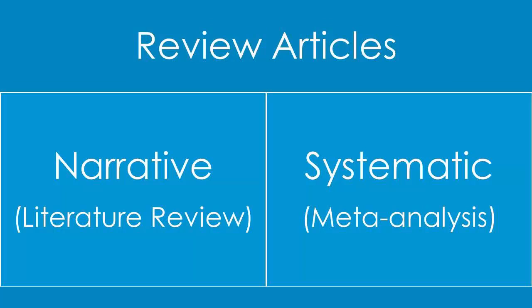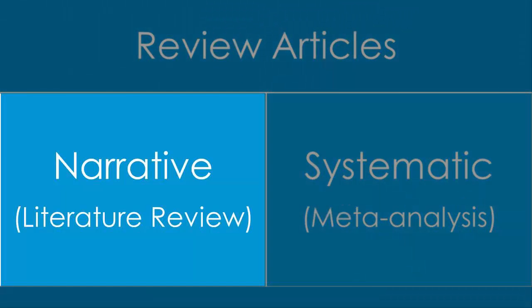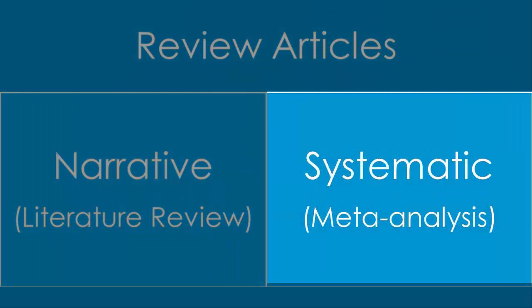Review articles in academic health science journals fall into two categories: a narrative review article and a systematic review article. The narrative style is usually compiled by an expert in his or her area, often called a literature review, while a systematic review represents a more structured and scientific analysis, often called a meta-analysis.